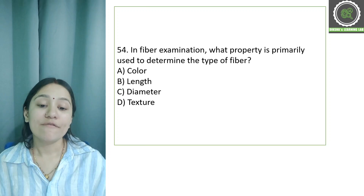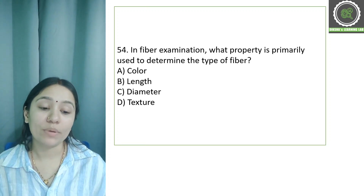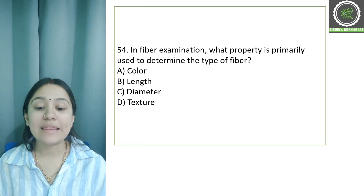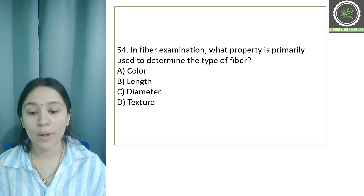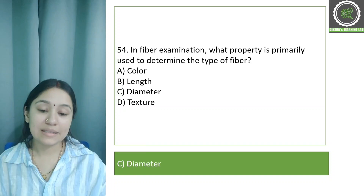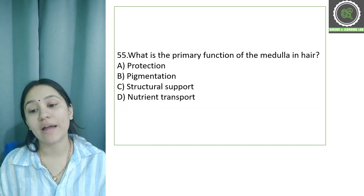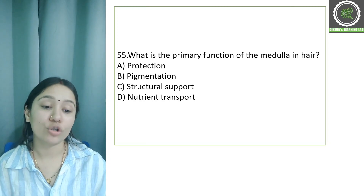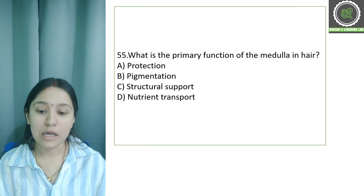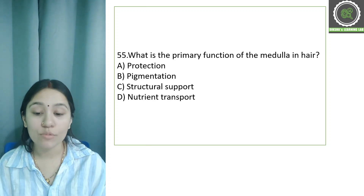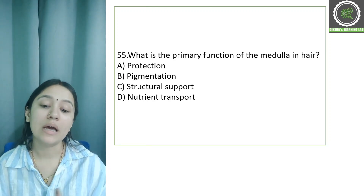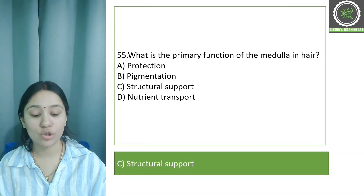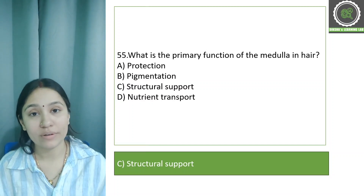Question number 56: In fiber examination, what property is primarily used to determine the type of fiber? Options: color, length, diameter, and texture. The correct answer is option C, diameter. Next question: What is the primary function of the medulla in hair? Options: protection, pigmentation, structural support, and nutrient support. The correct answer is structural support — the medulla provides structural support to the hair.